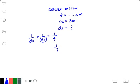That gives us 1 over F minus 1 over DO. And then we need to get the inverse of that, so we get DI equals 1 over that wholeness.